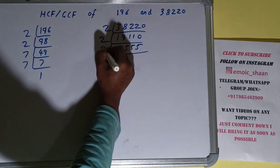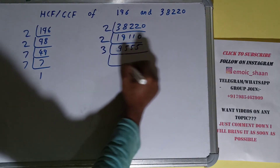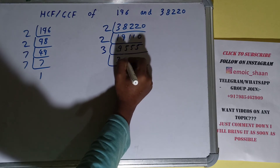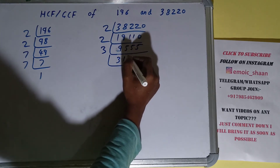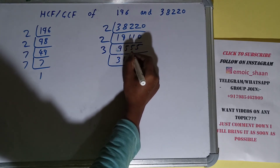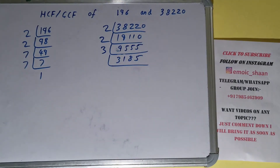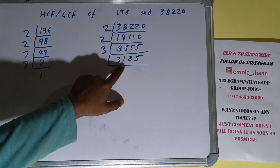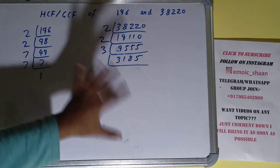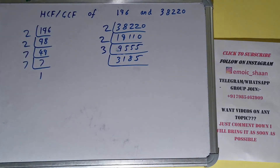Dividing 9555 by 3 gives us 3185. Now is 3185 divisible by 3? The digit sum is 3+1+8+5 = 17. No, it is not divisible by 3. So we'll check with the next lowest prime number, which is 5.